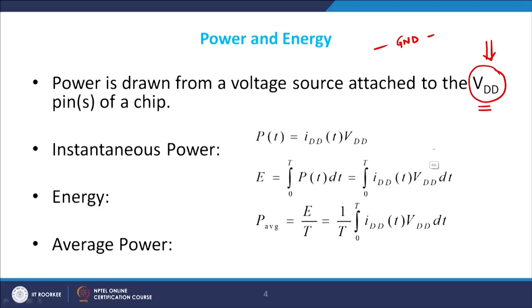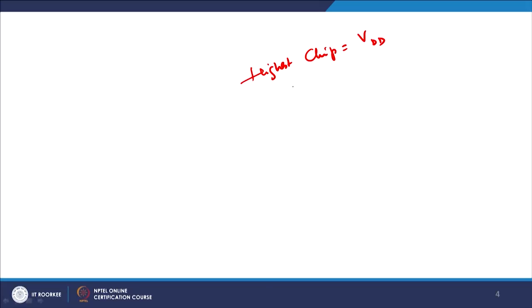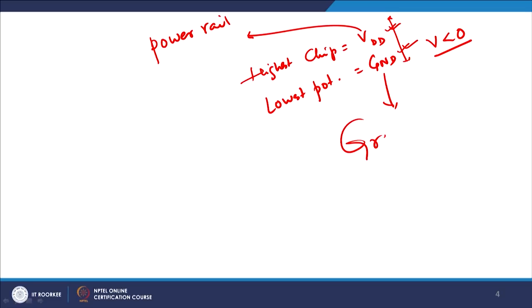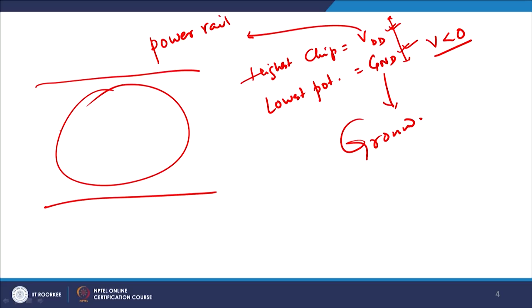In digital VLSI chip design the power supply is referred to as VDD, and the lowest potential is ground. The highest potential in a chip equals VDD and the lowest equals ground, though it can also be negative. These are known as the power rail and the ground rail respectively, and all circuits sit between these two rails.